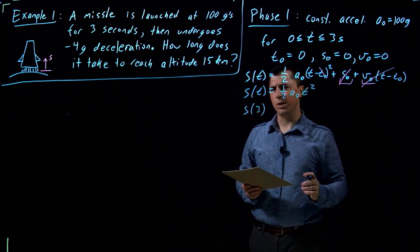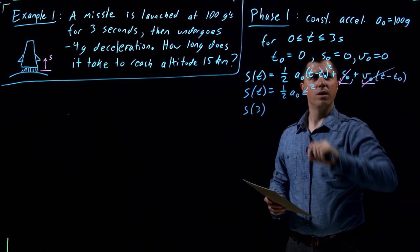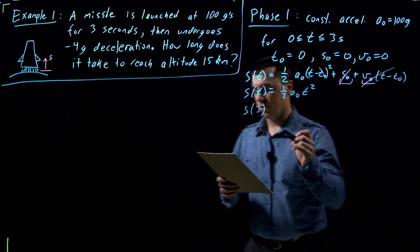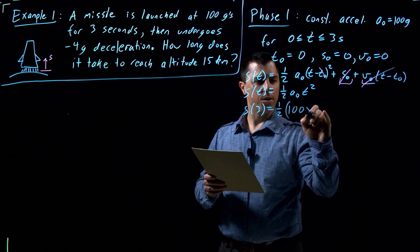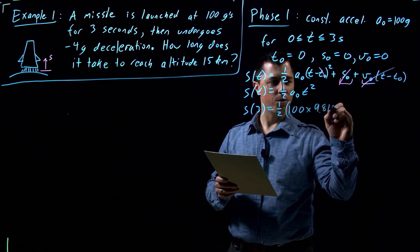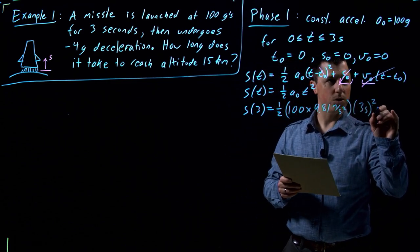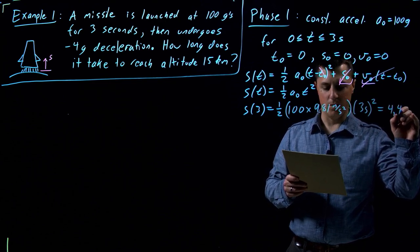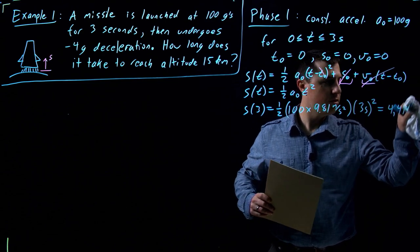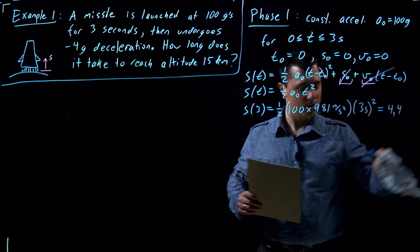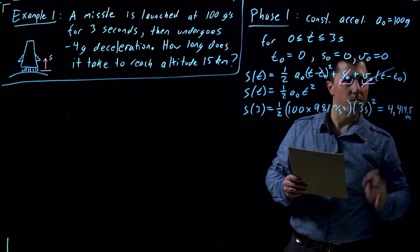We want to know how long it takes to reach 15 kilometers, so we first need to know how high we get in just this first phase — with constant acceleration of 100g in the first three seconds. This is one-half times 100 times 9.81 meters per second squared, times 3 seconds squared, which gives us 4,414.5 meters — a little bit under four and a half kilometers.